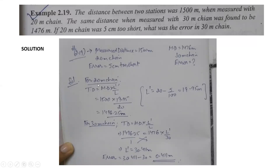We have data for the 20-meter chain. Using the formula, true distance equals measured distance multiplied by incorrect length divided by correct length. Measured distance is 1500 meters. The error is 5 cm too short, so incorrect length L' equals 20 minus 0.05, which is 19.95 meters. Correct length is 20 meters. So the true distance comes out to 1496.25 meters.